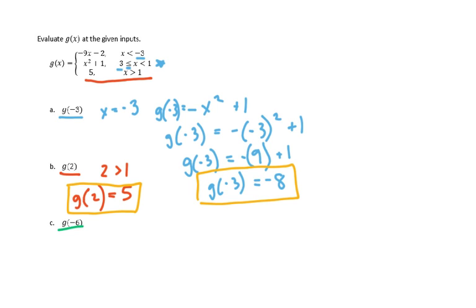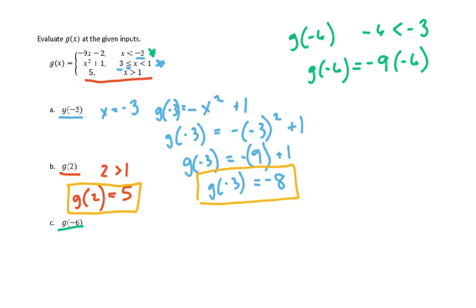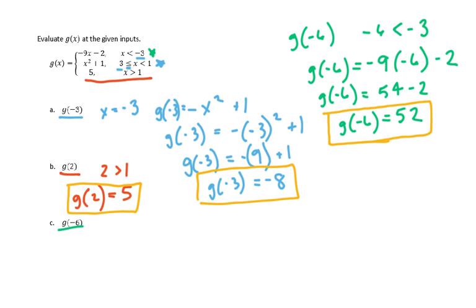Finally, we have g of negative six. We identify which function is defined on the domain that includes negative six. That's the first function, because negative six is less than negative three. We substitute negative six into negative nine x minus two, giving us negative nine times negative six minus two. Negative nine times negative six is positive 54, and 54 minus two gives us 52. So g of negative six is equal to 52.